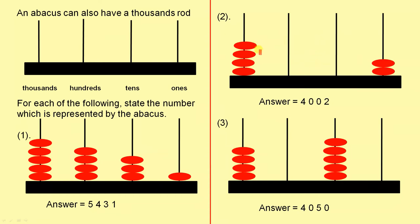In the thousands rod here, we have 1, 2, 3, 4. None in the hundreds, none in the tens, and 2 in the ones. So it's 4,002.